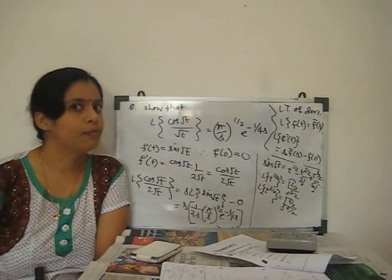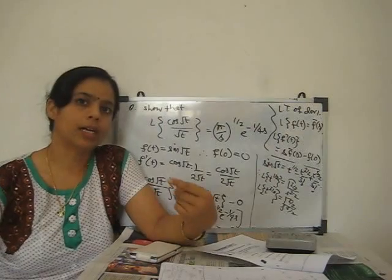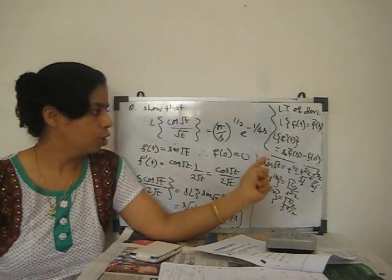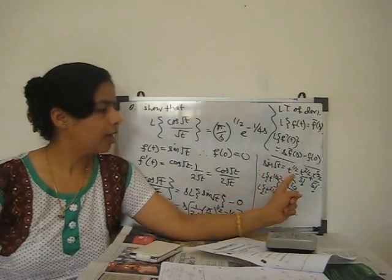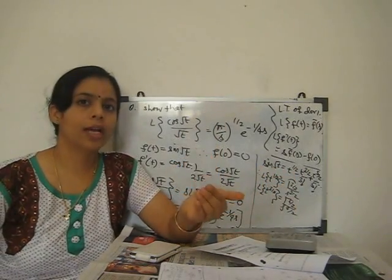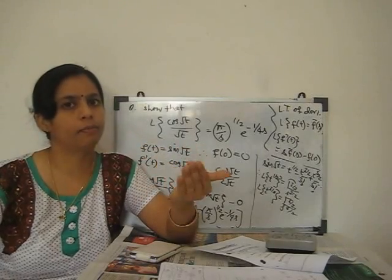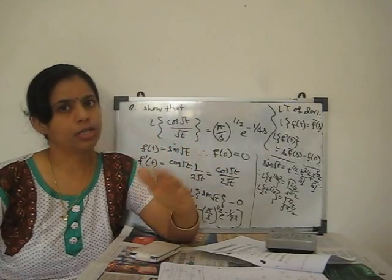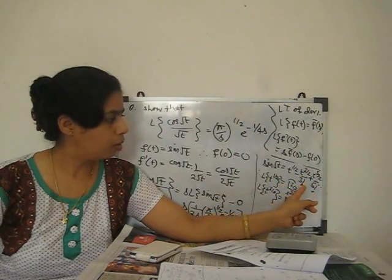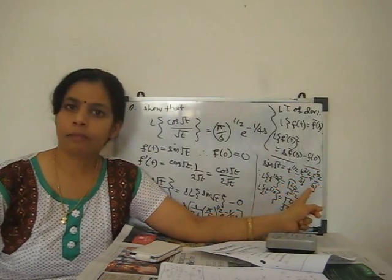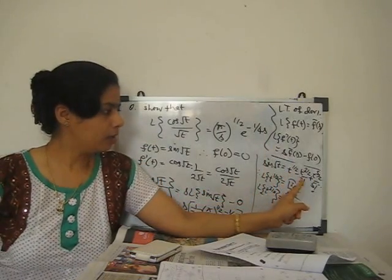Now we need the Laplace transform of sin√t. We cannot find it directly because t appears to the power 1/2, so we expand the sine series: sin x = x − x³/3! + x⁵/5! − x⁷/7! + ... Substituting x = √t gives: √t − t^(3/2)/3! + t^(5/2)/5! − ...